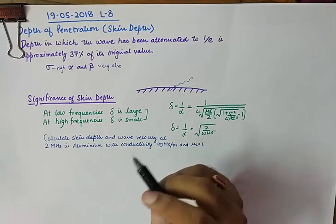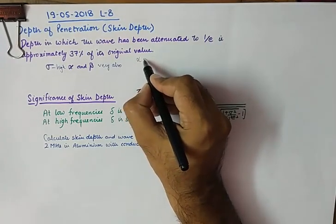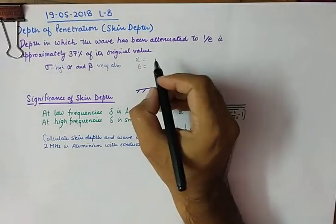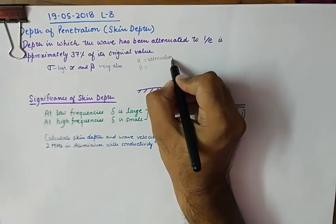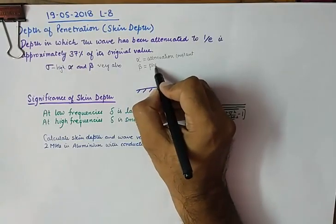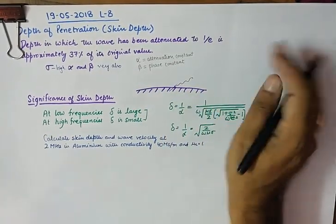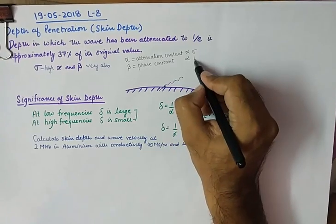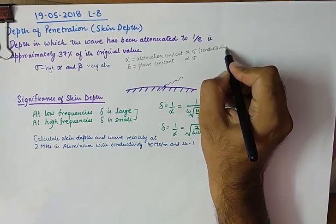Now, to understand the concept of skin depth, we must know the values of alpha and beta for different media. Here, alpha is attenuation constant, and beta is known as the phase constant. Both alpha and beta are directly proportional to sigma, which is the conductivity of the medium.